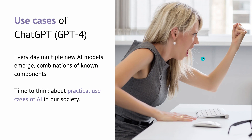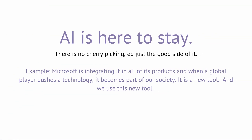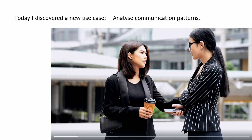As you can see in the picture, today we talk about human emotions. There's one prerequisite I would like to state: for me, AI is here to stay. You do not switch off ChatGPT or GPT-4 tomorrow and it's gone. My presumption is it is here to stay — there's no cherry-picking, just looking at the good side. AI is part of our society and we have to cope with it. An example is Microsoft — it is integrated in all of its products, and when a global player pushes this technology, it becomes part of society. It is simply a new tool that we humans use every day.